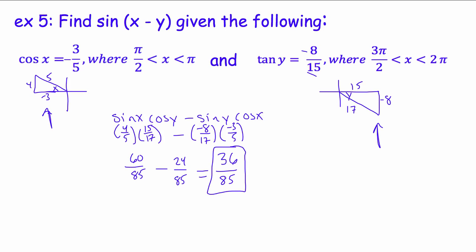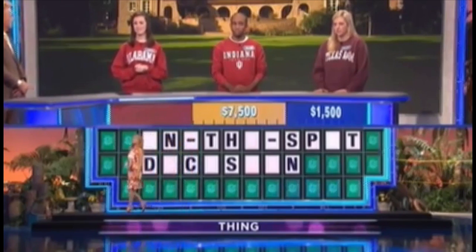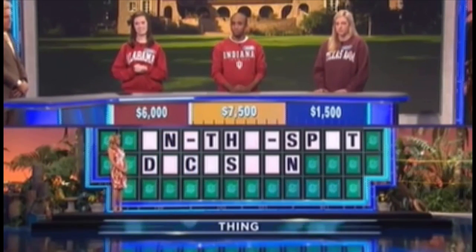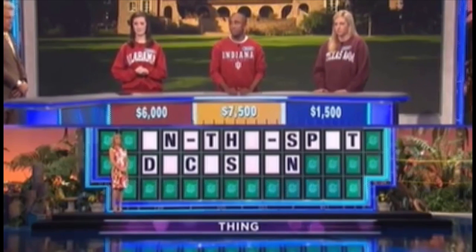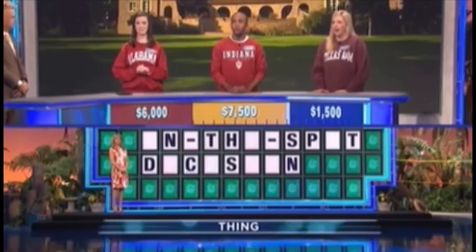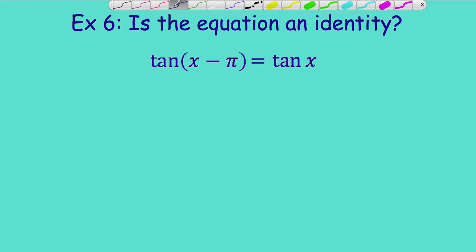Let's see how our Wheel of Fortune guy finishes. He has one seat left and guesses 'On the spot dice spin' — which is wrong. Shelby solves it: 'On the spot decision.' What blows my mind is he had three of the worst guesses ever — blew a chance at a million dollars, blew a chance at a car — and still won the game.